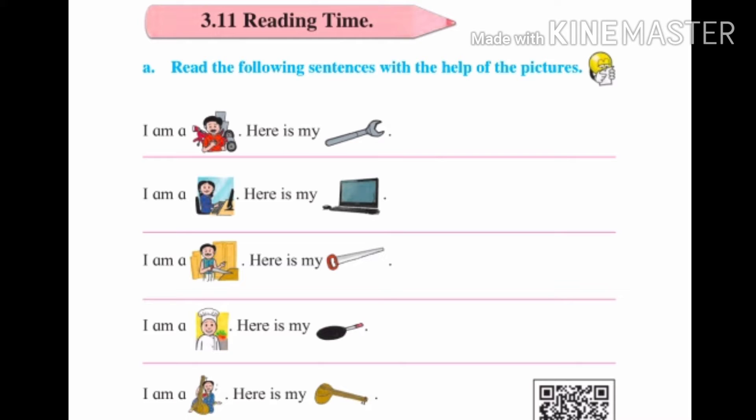Reading time means vachan karne acha where — read means vachan karne, time means where. Read the following sentences with the help of the pictures. Shabdan cha sahya ne khalil vachya vachaa. Following means khalil, sentences means vachya, help means mother, pictures means chitra. Khalil vachyaan madhe kahi shabda dhelele ahyet and kahi chitra dhelele ahyet.